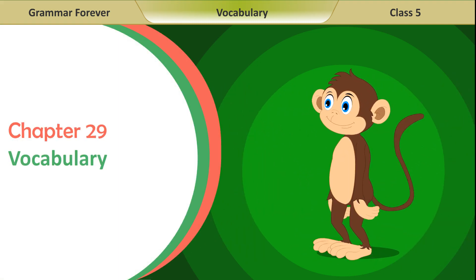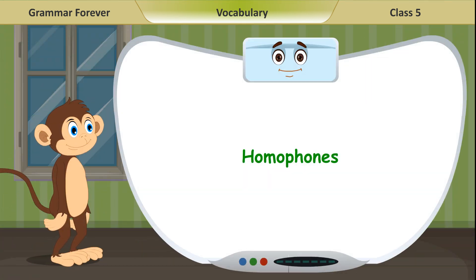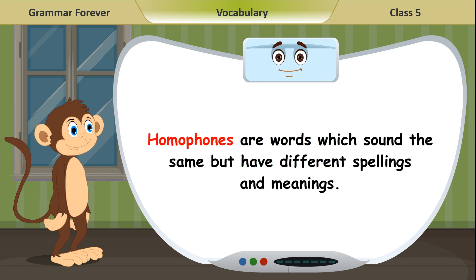Chapter 29: Vocabulary. Homophones. Homophones are words which sound the same but have different spellings and meanings.